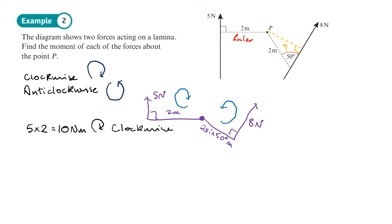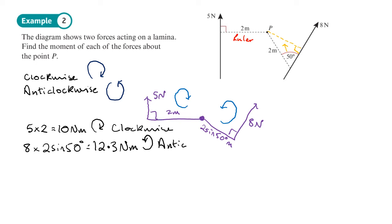The first moment is 5 times 2, which is 10 Newton meters, acting clockwise. The second moment is 8 times 2 sin 50, which gives 12.525... — so approximately 12.3 Newton meters, acting anti-clockwise. Knowing the direction of each moment will be useful later. You should now be able to do Exercise 4A on page 72 of the Stats and Mechanics Year 2 book.